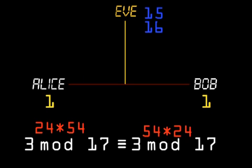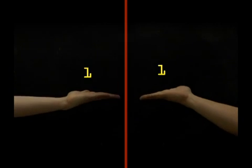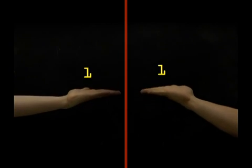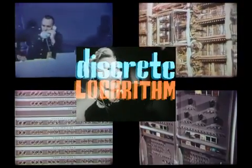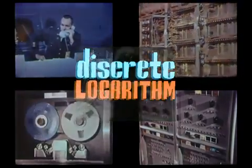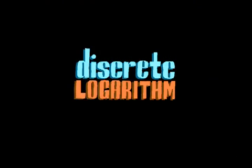Notice they did the same calculation with the exponents in a different order — 24 times 54 is the same as 54 times 24. Without one of the private numbers, Eve will not be able to find the solution. And this is how it's done. While Eve is stuck grinding away at the discrete logarithm problem, with large enough numbers, this will literally take forever.